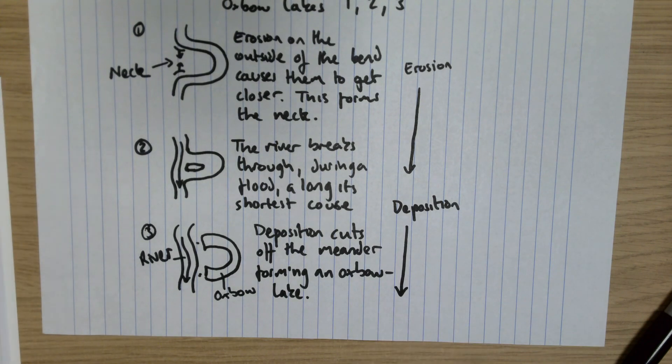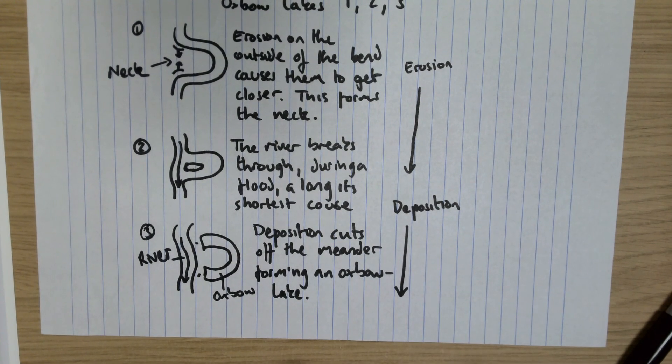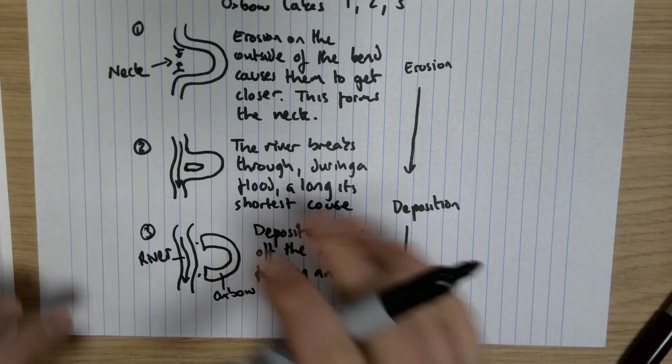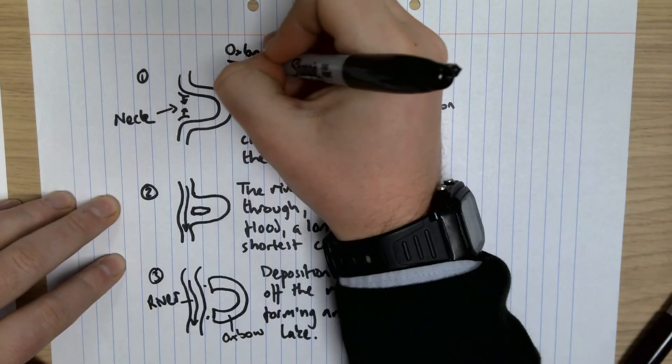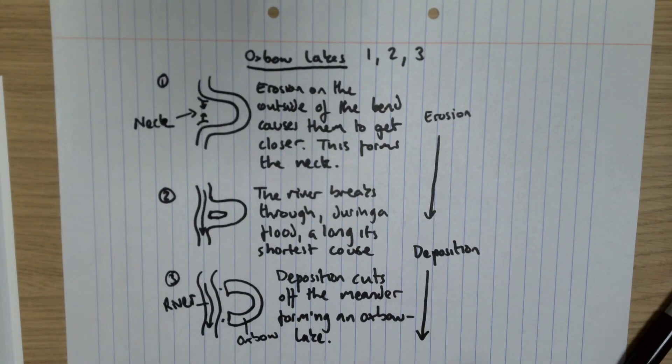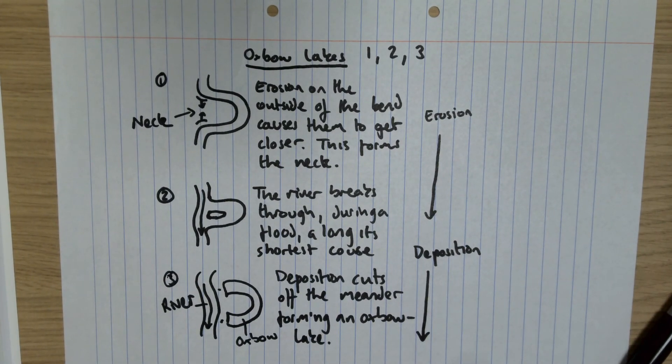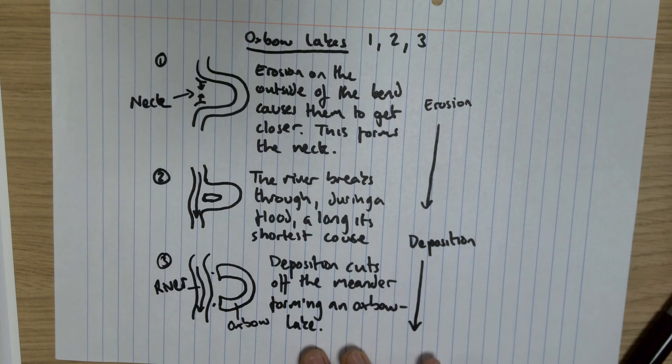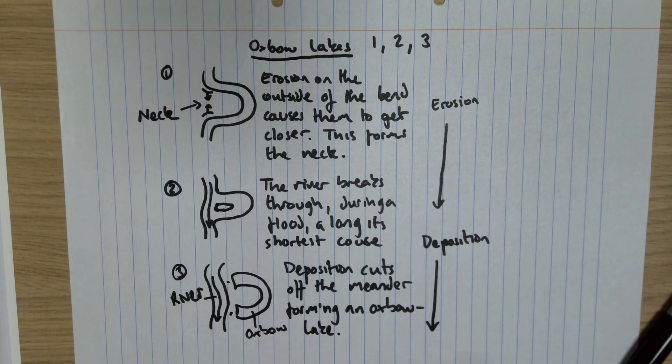And I'll do a little one on meanders, but oxbow lake formation - that's our simple one, two, three. If you can regurgitate that in your exam, our one, two, three - always simplify the complex in physical geography - then you'll get the marks that you want.